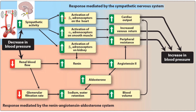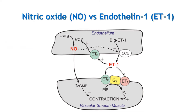Sympathetic stimulation activates beta-1 receptors on the heart, leading to increase in cardiac output and thereby increase in blood pressure. Activation of alpha-1 receptors on vascular smooth muscles increases peripheral vascular resistance as well as venous return, further increasing blood pressure. Moreover, beta-1 receptors are also present on the kidney, which stimulates renin release. And because of falling blood pressure, renal blood flow decreases, which also stimulates renin release from the JG apparatus of the kidney, thus activating the renin-angiotensin system. Renin converts angiotensinogen to angiotensin-1, which is then activated to angiotensin-2 by the enzyme angiotensin-converting enzyme.